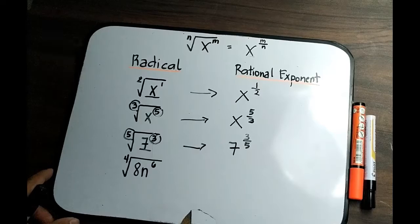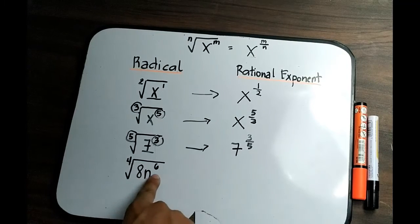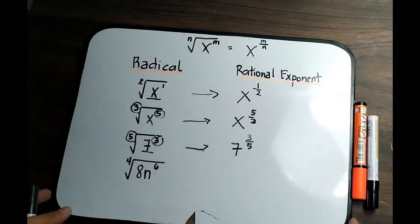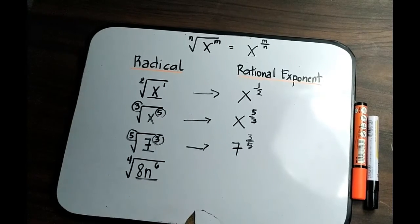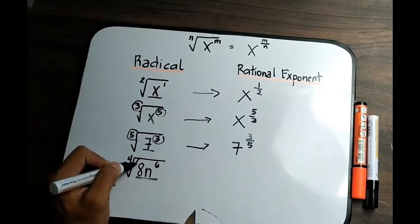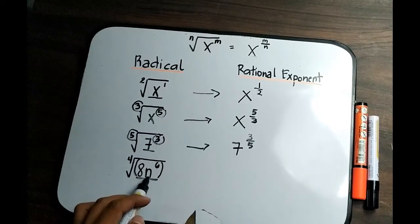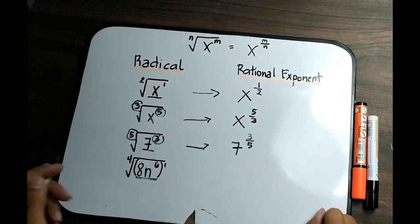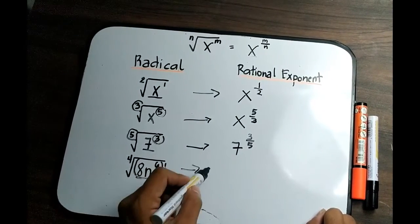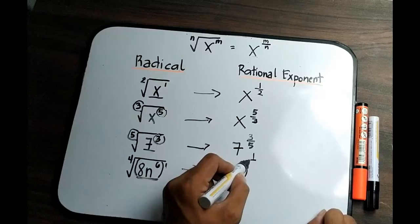For number 4, this one is quite different. We have the fourth root of 8n raised to 6. There are different ways to convert it to a rational exponent. My approach is to treat this as a whole expression enclosed in parentheses, where the exponent of the whole radicand 8n raised to 6 is just 1. Following the pattern, it converts to the quantity of 8n raised to 6, to the power of 1 all over 4.